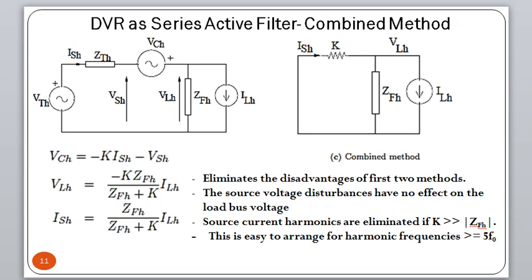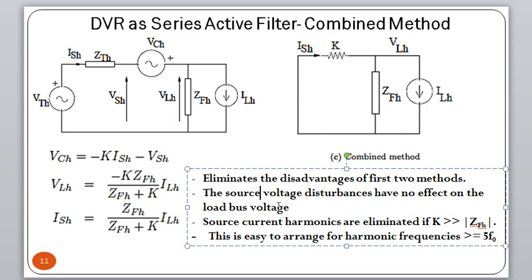In the combined method (SAF control strategy 3), the disadvantages of both previous strategies are eliminated. Source voltage disturbances have no effect on the load bus voltage, and source current harmonics ILH are also eliminated when K is greater than ZFH. This is applicable for filtering all harmonics with frequencies greater than or equal to 5F0.